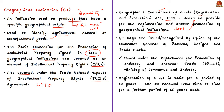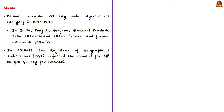In India, GI tags are issued or recognized by the Office of the Controller General of Patents, Designs and Trademarks, which comes under the Department for Promotion of Industry and Internal Trade in the Ministry of Commerce and Industry. The registration of a GI tag is valid for a period of 10 years but can be renewed from time to time for a further period of 10 years each. The Basmati rice variety received a GI tag under the agricultural category in the year 2015-16.